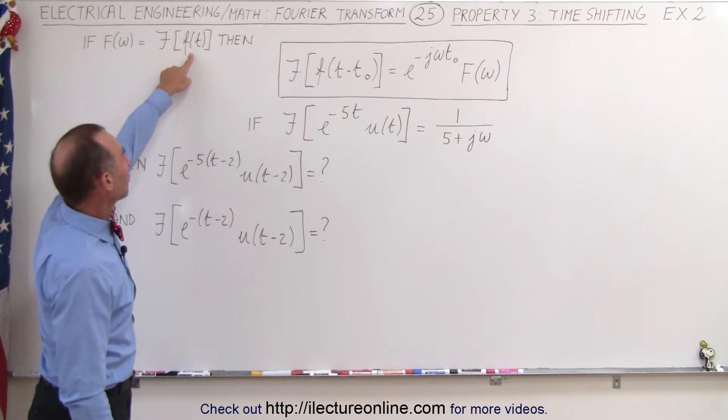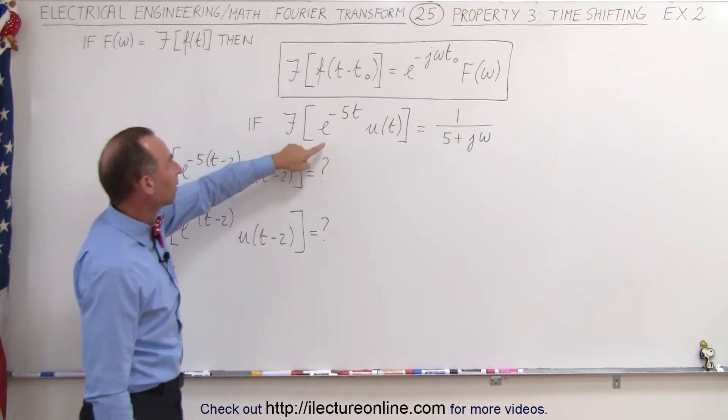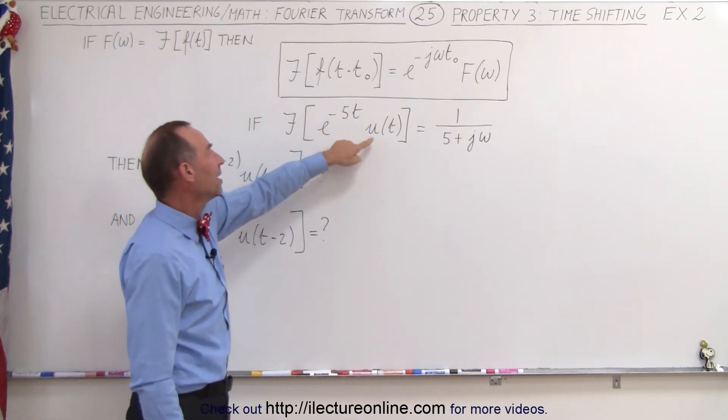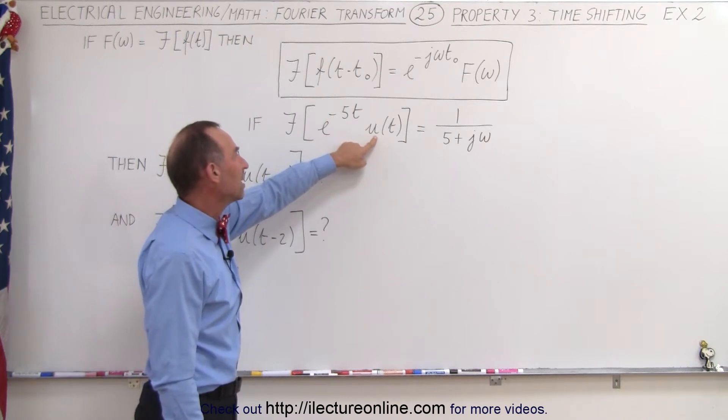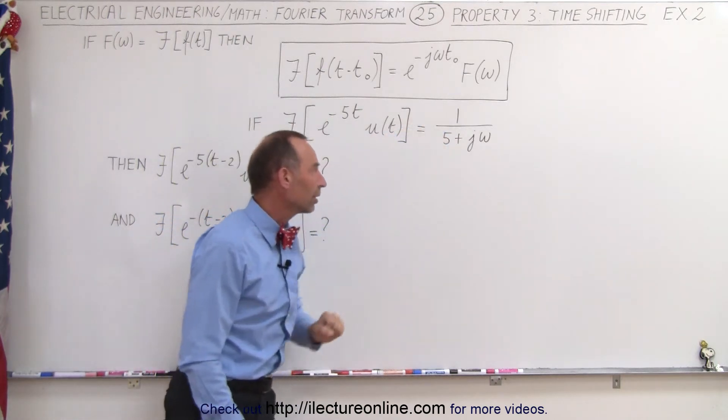Notice that we have an input function f(t) which is in this case defined as e to the minus 5t times the step function u(t). Then the Fourier transform will look like this.